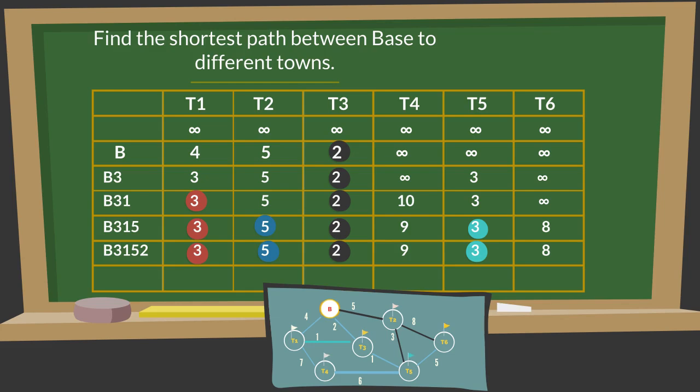Now, out of town 6 and town 4, town 6 has the smallest working value or distance. So it will be source for next working. Up till now, students can see that we have finalized the shortest distance among base to 5 different towns.